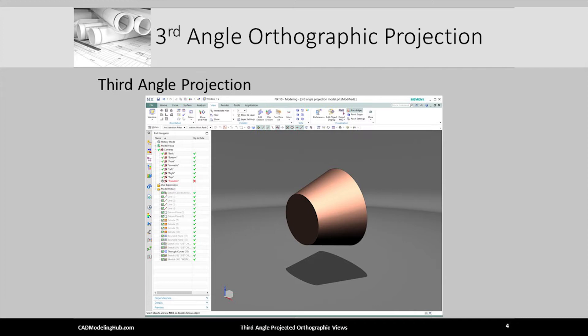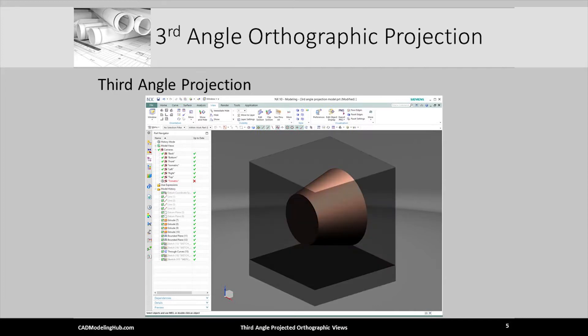Next, I place the cone inside a glass cube or box. The faces of the glass cube are the standard six orthographic planes: front, right, top, left, back, and bottom.